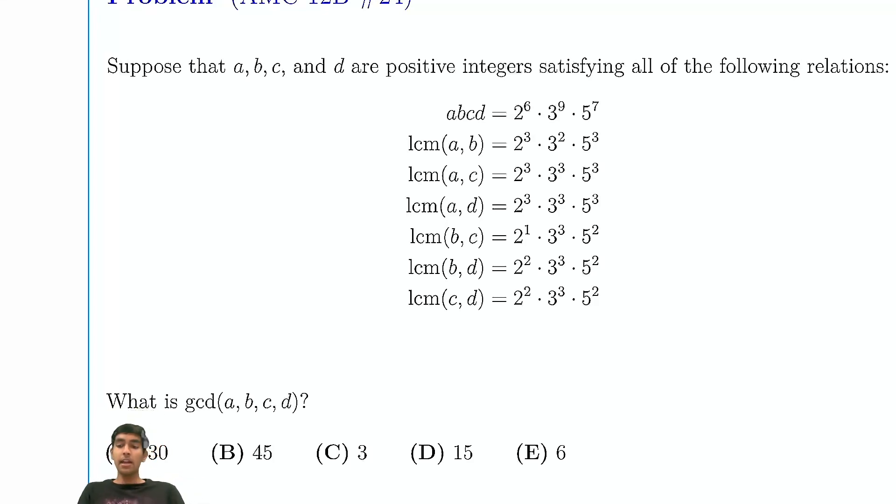So the idea in these kind of problems is we always want to look at each prime individually. Starting off with 2. Now, LCM of AB is 2 cubed. So if you look at A, B, C, and D, let's say A is 2 to the x, B is 2 to the x, C is 2 to the y, D is 2 to the z, and let's say 2 to the w.